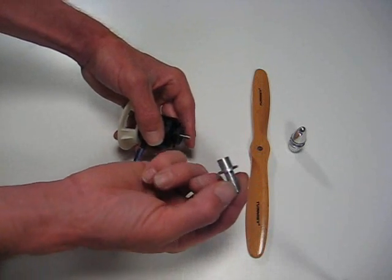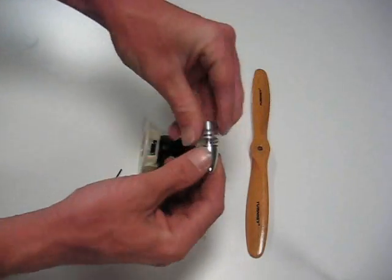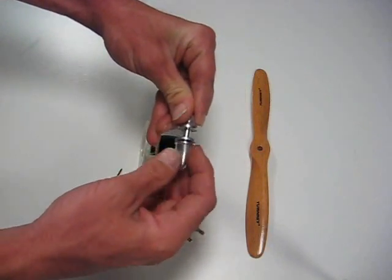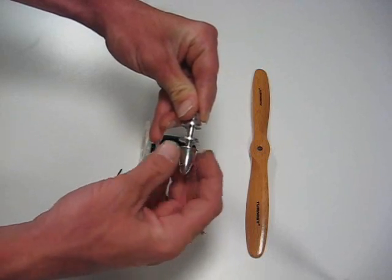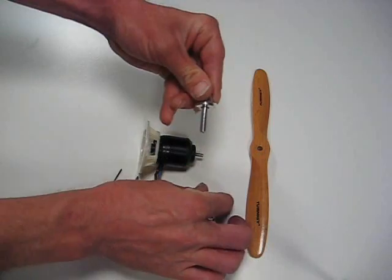Slide the rest of this spinner adapter off and set it aside. Now, here's the adapter that comes with this kit. Remove the cap. There's a washer.